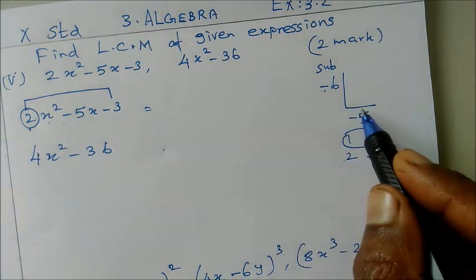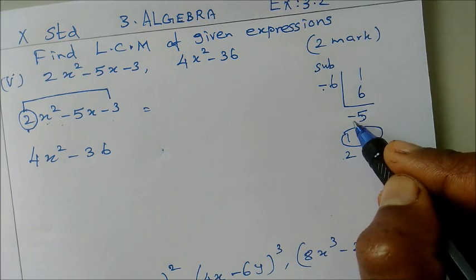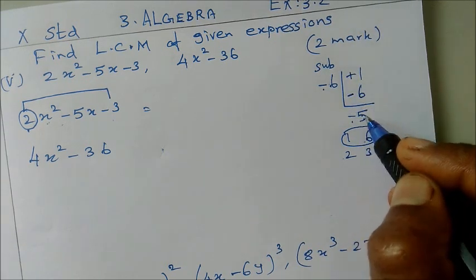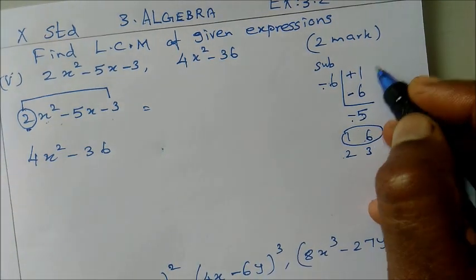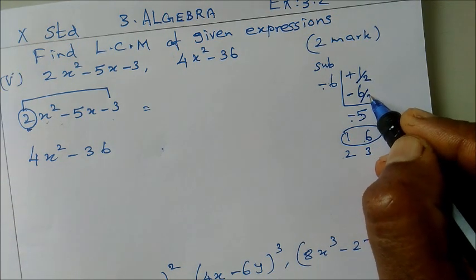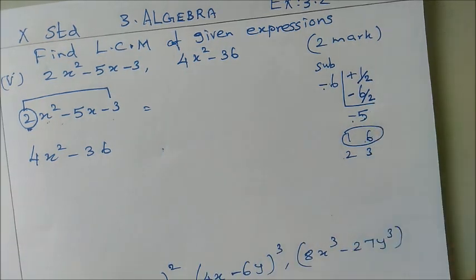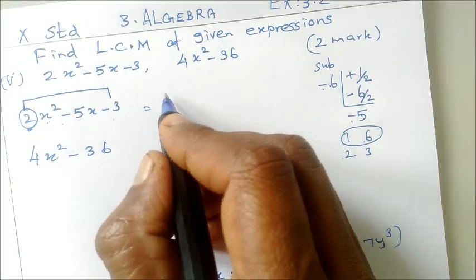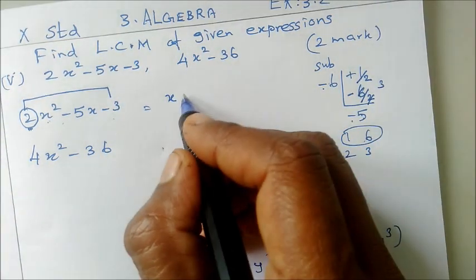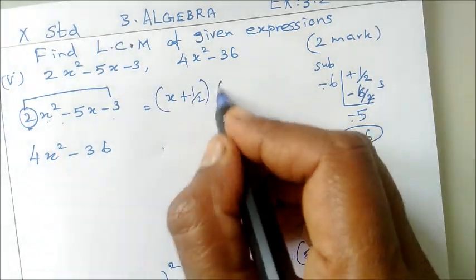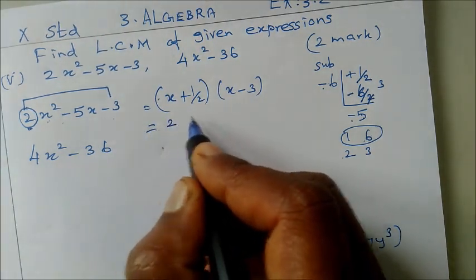1, 6. Here the x squared coefficient is 2. So we divide each factor by 2. This is factorization. Simplifying and combining with x, cancel this, 3 comes. Now x plus 1/2 into x minus 3.